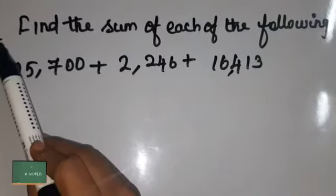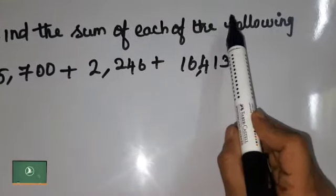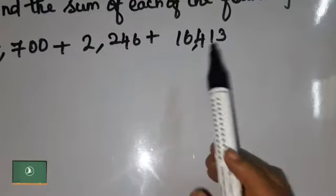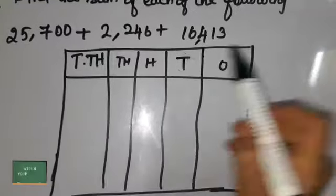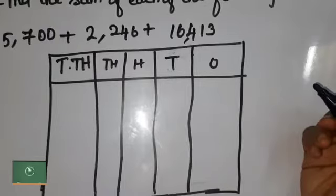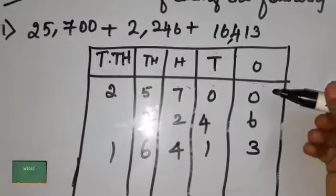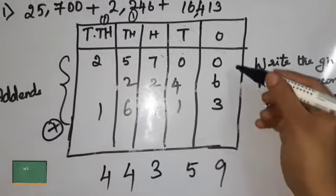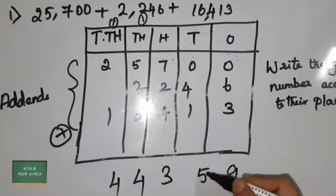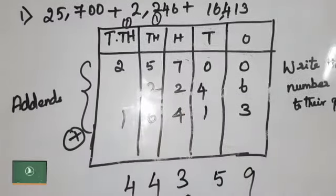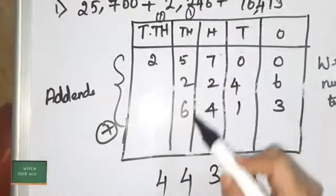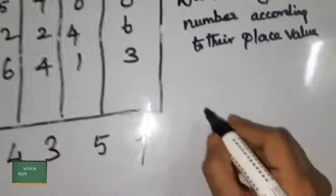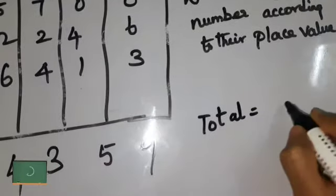Exercise 2.1, second section: Find the sum of each of the following. I have taken numbers with 3 addends and represented them according to their place values. Adding: 0 plus 6 plus 3 is 9; 0 plus 4 plus 1 is 5; 7 plus 2 plus 4 is 13 — 1 is carried forward to the thousands place; 5 plus 2 plus 6 is 14 — 1 is carried forward to the ten-thousands place. So the total is 44,359.